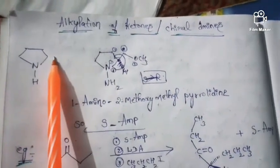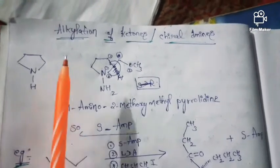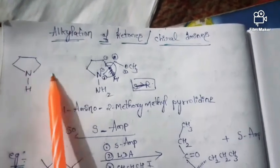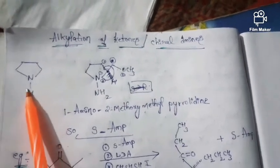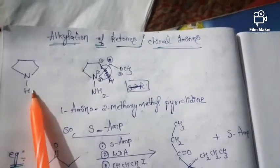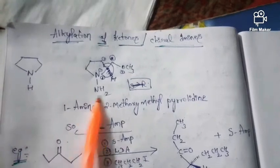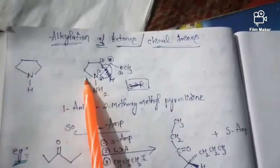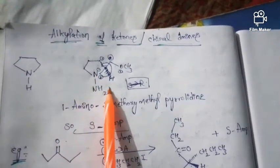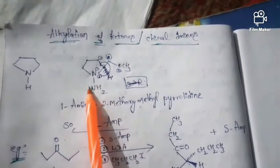This is pyrrolidine. We know that this is pyrrolidine. Here we have a hydrogen, and if we substitute this hydrogen with an amine group at the first position, here we have substituted the amine group.